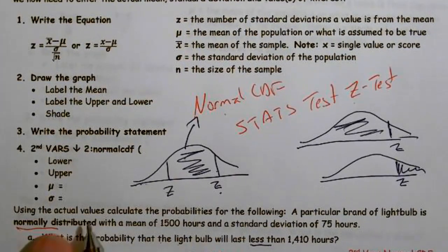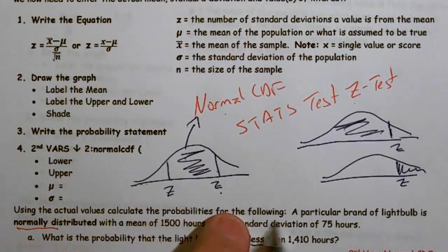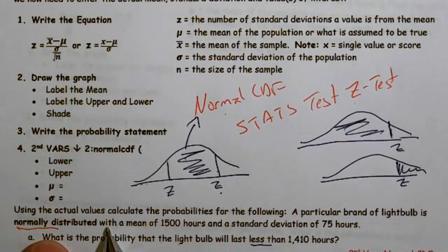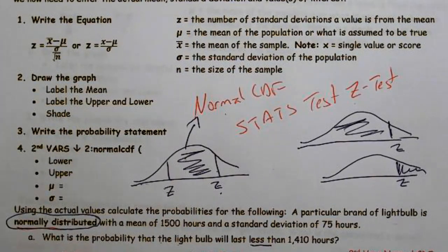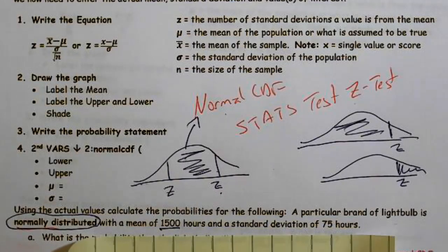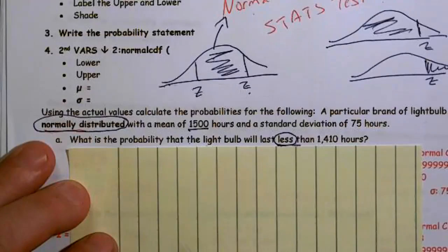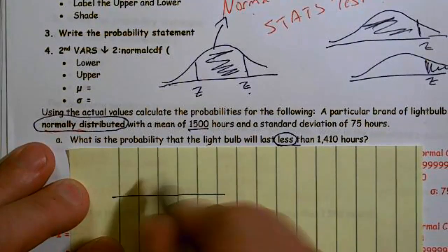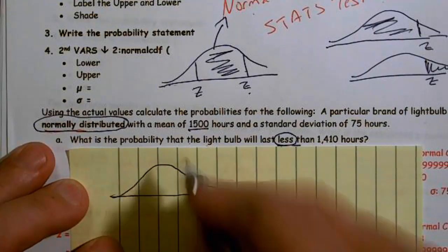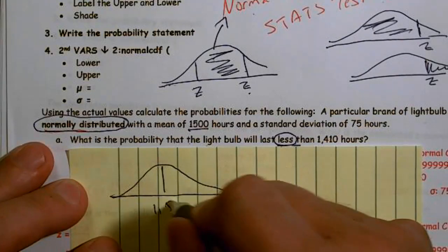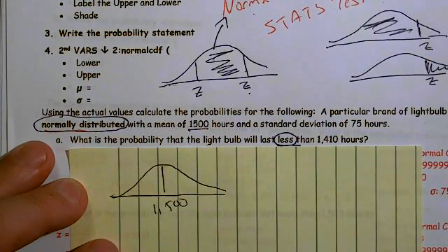Our question asks us to use the actual values to calculate the probabilities for the following. A particular brand of light bulb is normally distributed — as soon as they tell me this, I can use the normal function of the calculator. We have a mean of 1500 and a standard deviation of 75. They want to know the probability it'll last less than 1410. Every time I have a problem like this, I take a moment to draw the picture. It doesn't need to be beautiful, but it can help you get partial credit.